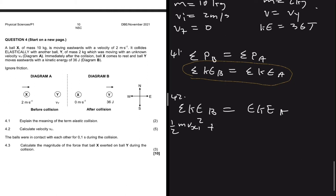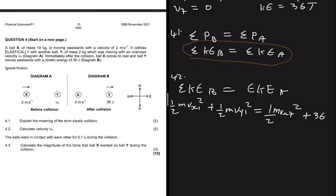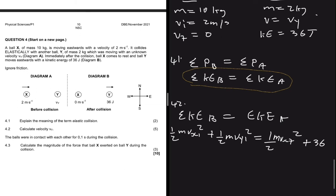Setting up the equation: EK before equals EK after, so one-half M VX-initial squared plus one-half M VY-initial squared equals one-half M VX-final squared plus 36 joules. For ball Y's kinetic energy after, we don't need to calculate it since it's already given as 36 joules. The initial velocity of ball X is 2 meters per second.